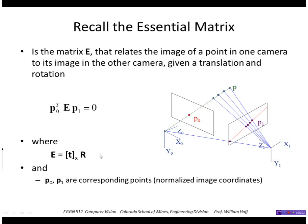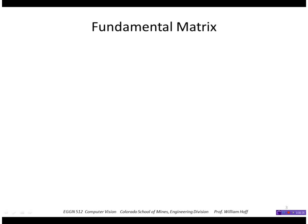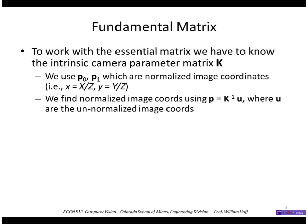The fundamental matrix is useful for this reason: to work with the essential matrix, we have to know the intrinsic camera parameter matrix K. That's because we are working with normalized image coordinates where the effective focal length is one and the image center is in the middle of the image. We use K to find the normalized image coordinates.